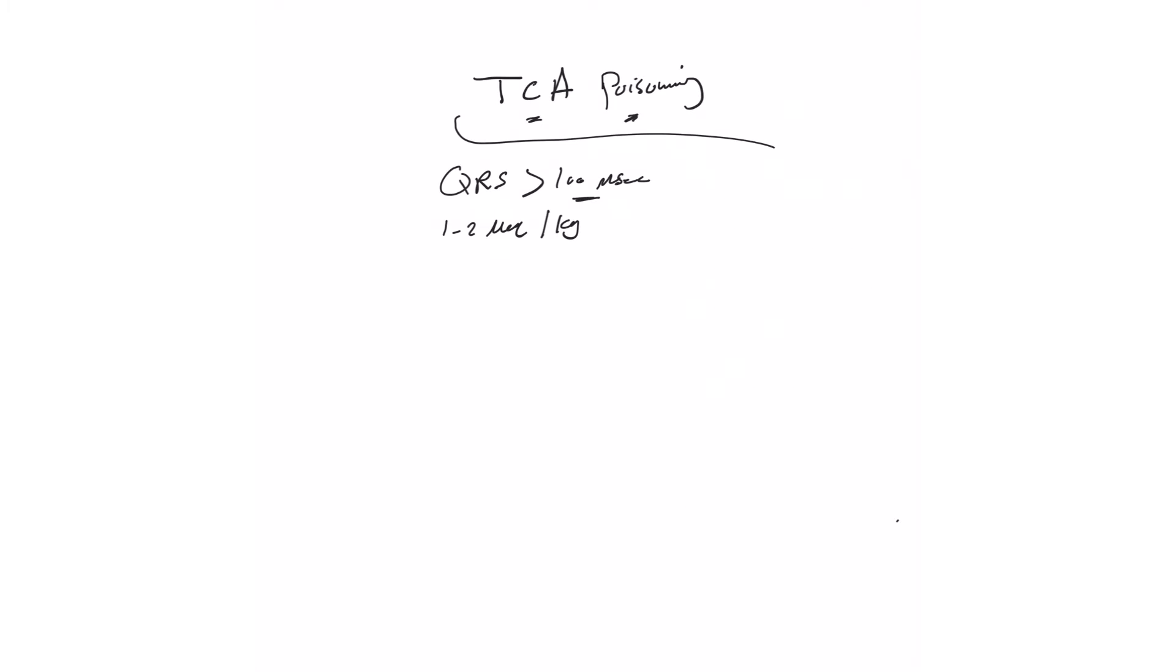You should be monitoring the EKG on telemetry. If the QRS is widened, you don't need to push the second one. If it's still wide, go ahead and push the second amp. That's to give pushes.